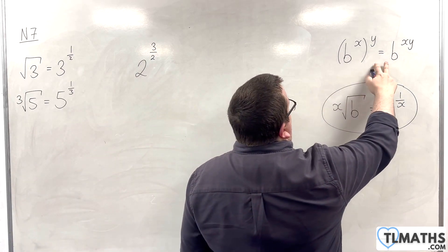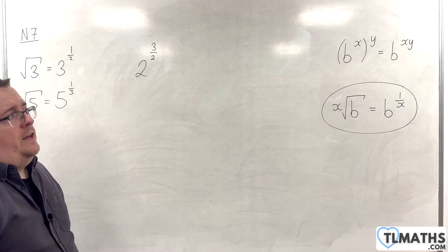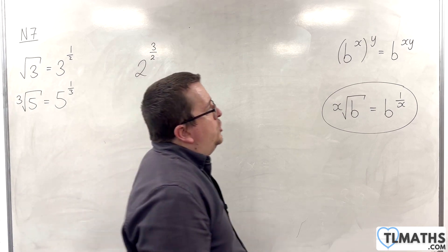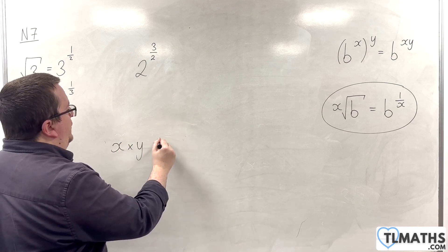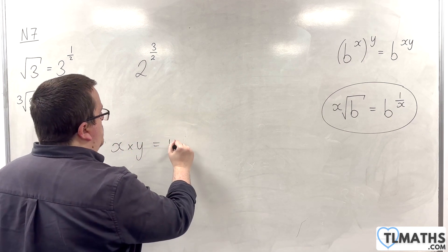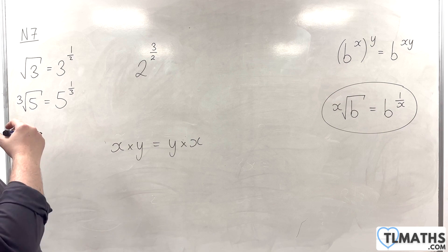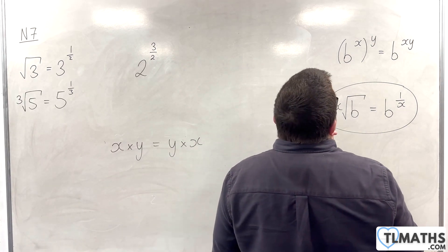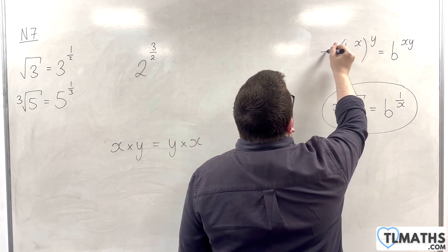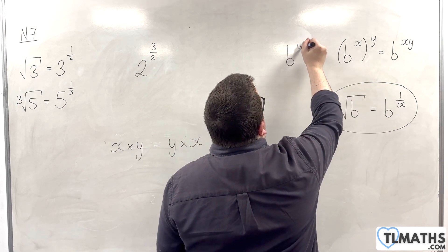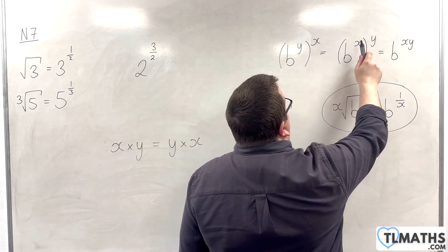Now, I'm going to go back to this. Let's go back to that rule. b to the power of x all to the power of y is b to the power of x times y. Now, actually, we know that x times y has to be the same as y times x. So, what I could do is I could say, does it matter if I'm doing b to the power of x then to the power of y? Isn't this just the same as b to the power of y to the power of x? Because y times x has to be the same as x times y.